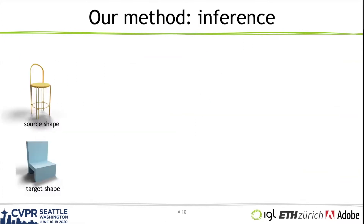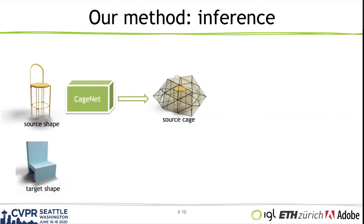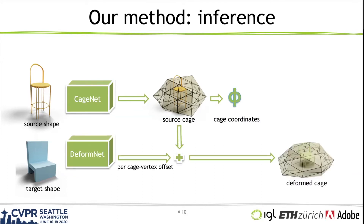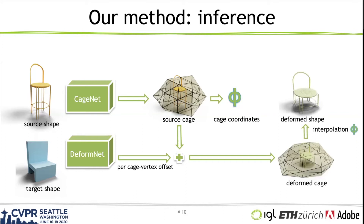First, we use a neural network to automatically generate the enclosing cage conditioned on a source shape, from which we can compute the coordinates deterministically. Then another network deforms this cage by offsetting the cage vertices. Finally, we apply the interpolation to obtain a deformed shape. Because the interpolation is smooth, the local geometry details can be preserved naturally.